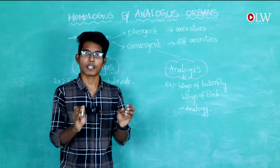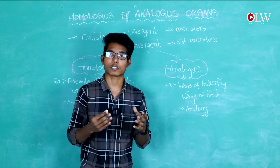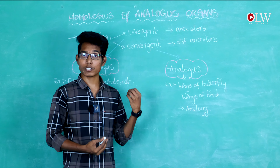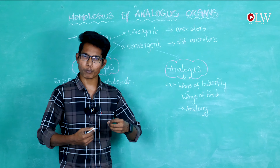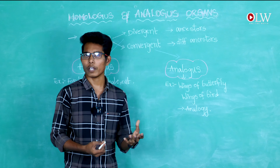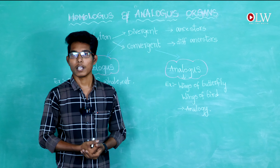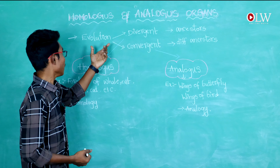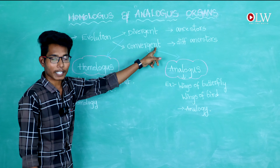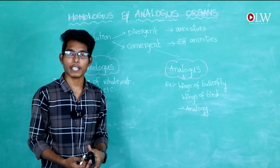Homologous organs show divergent evolution. What is divergent evolution? Evolution is divided into two types: divergent evolution and convergent evolution. Homologous organs are associated with divergent evolution.